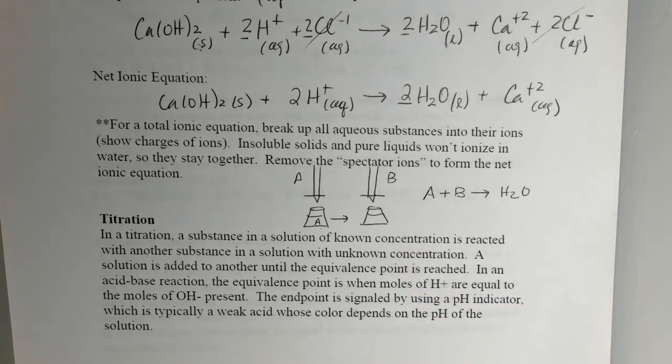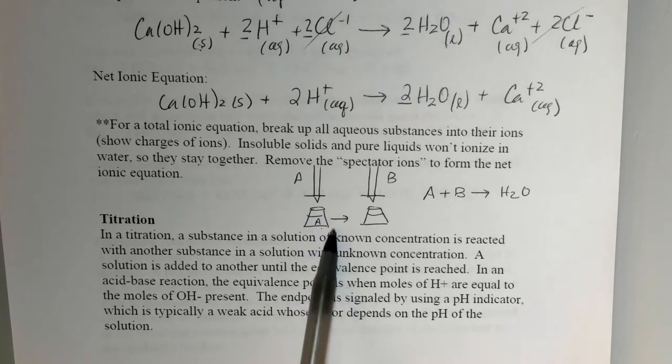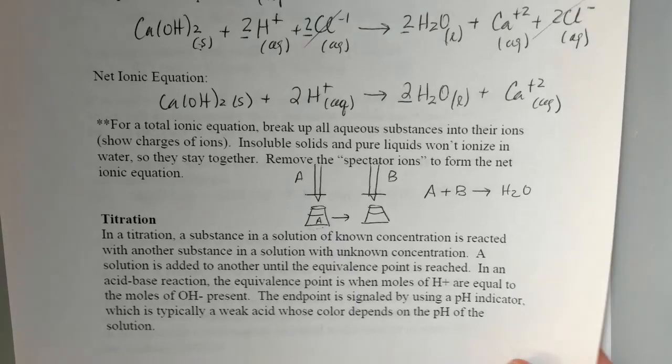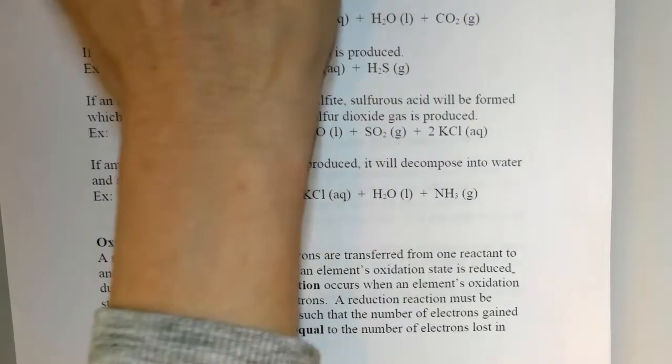And so we use titration to determine the concentration of the unknown. It doesn't have to be the acid. It could be the base. But in lab, what we did for intro is we were determining the concentration of the acid. So on the next page, we've got an example of this type of experiment.